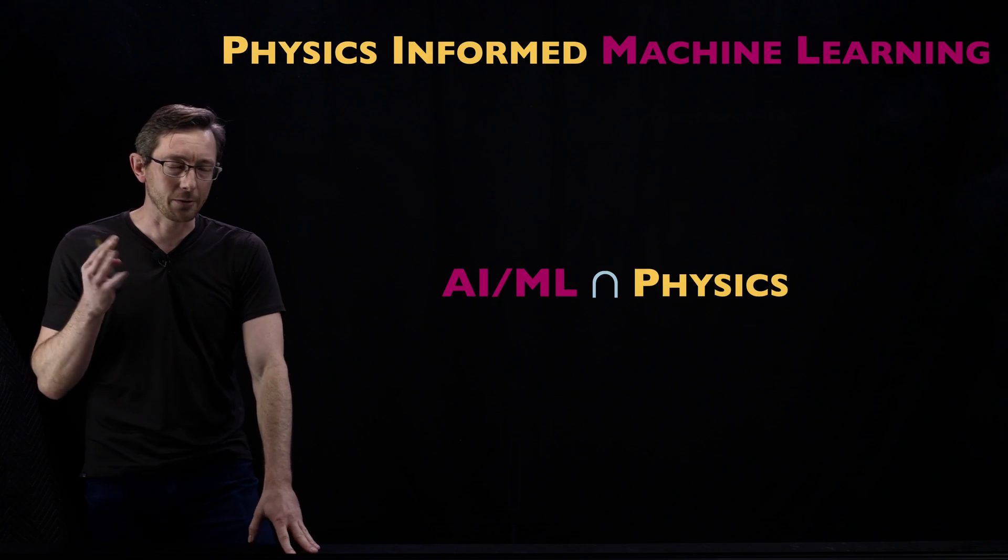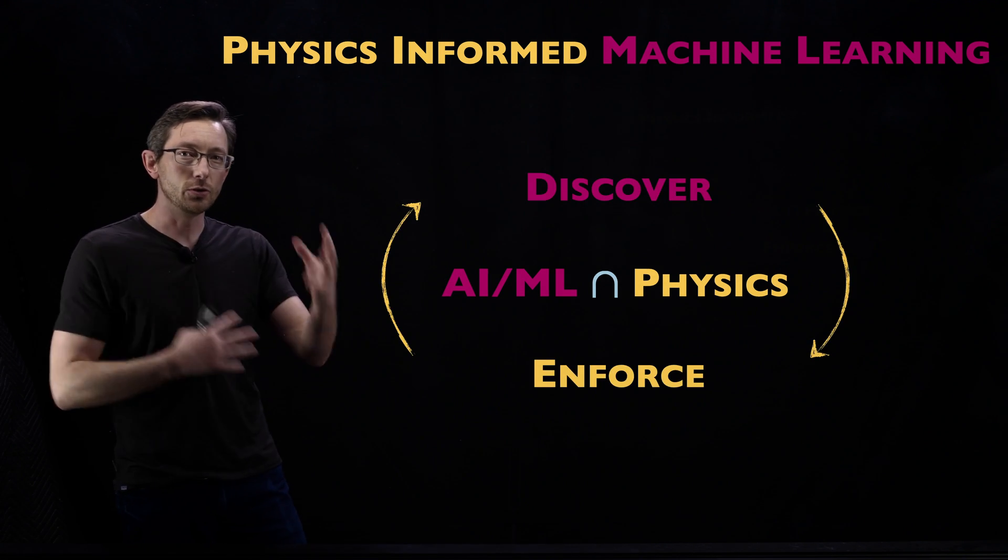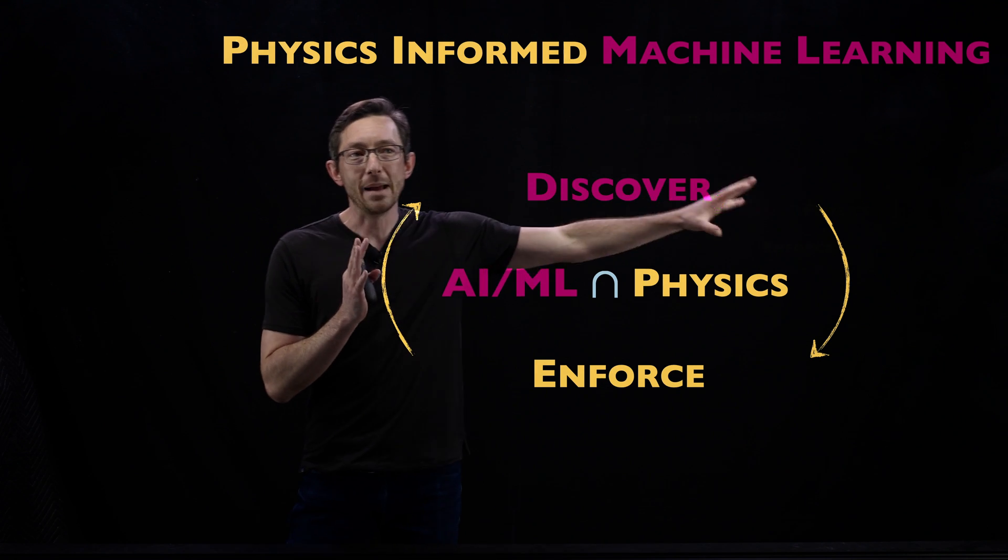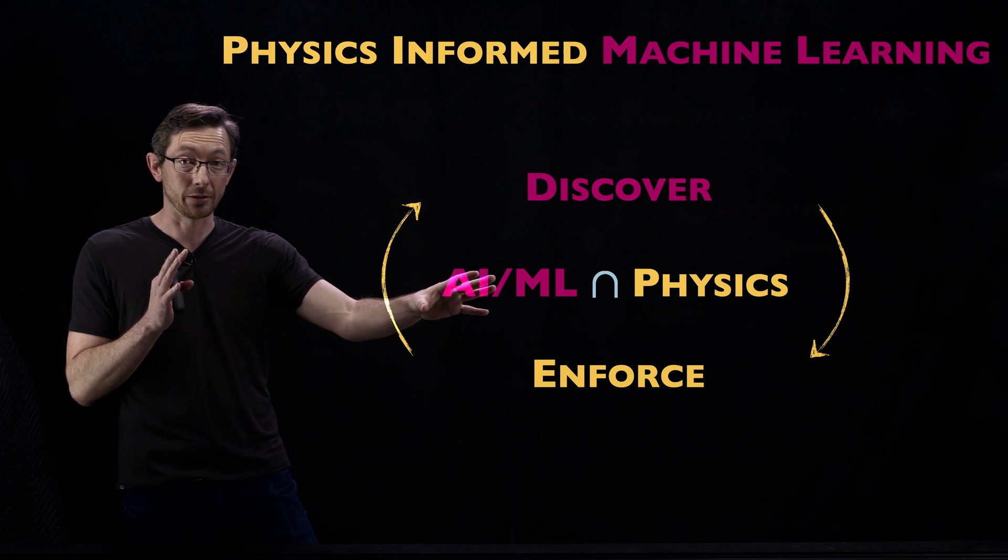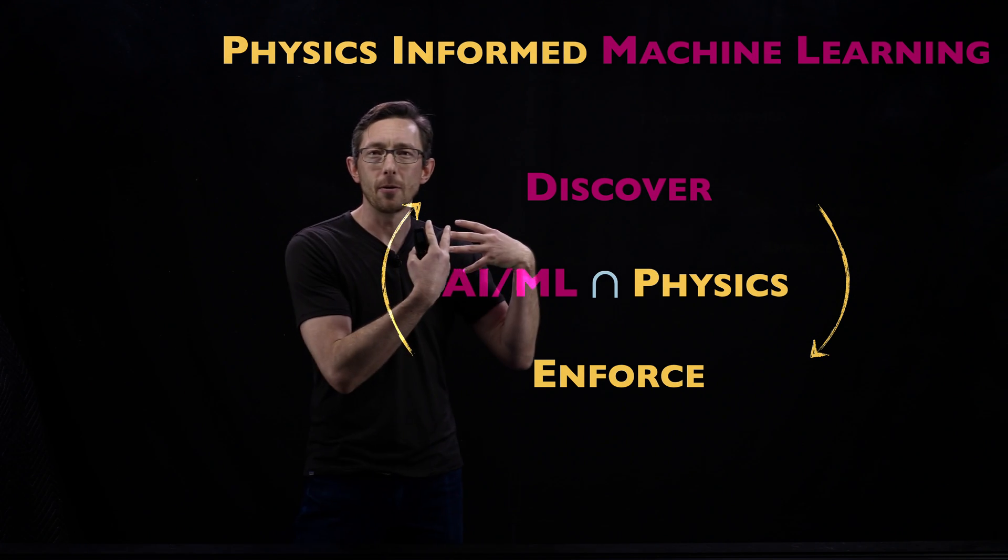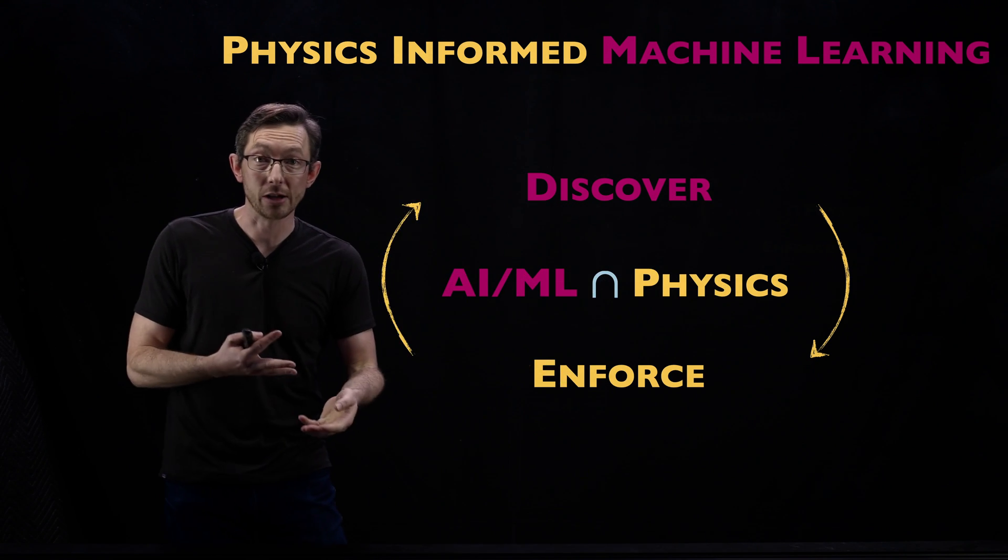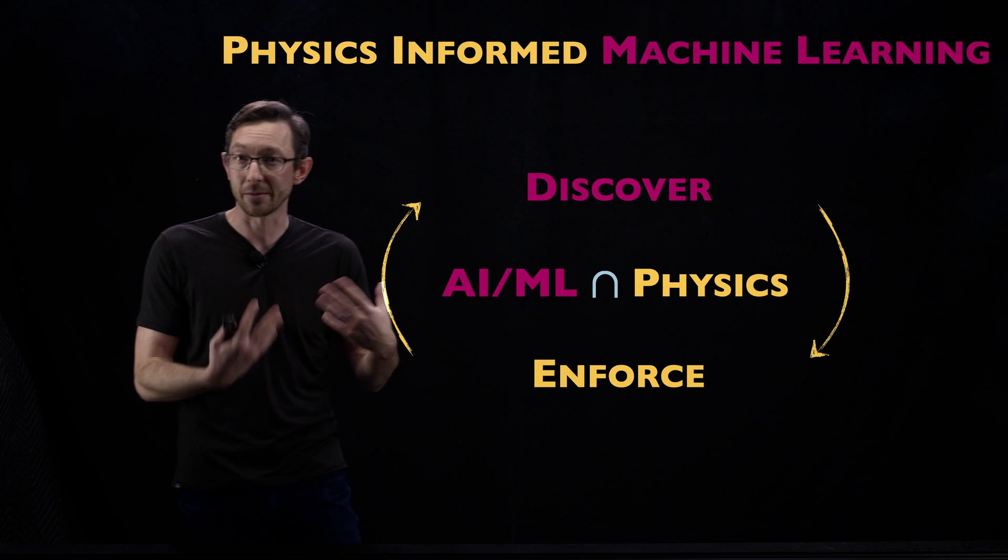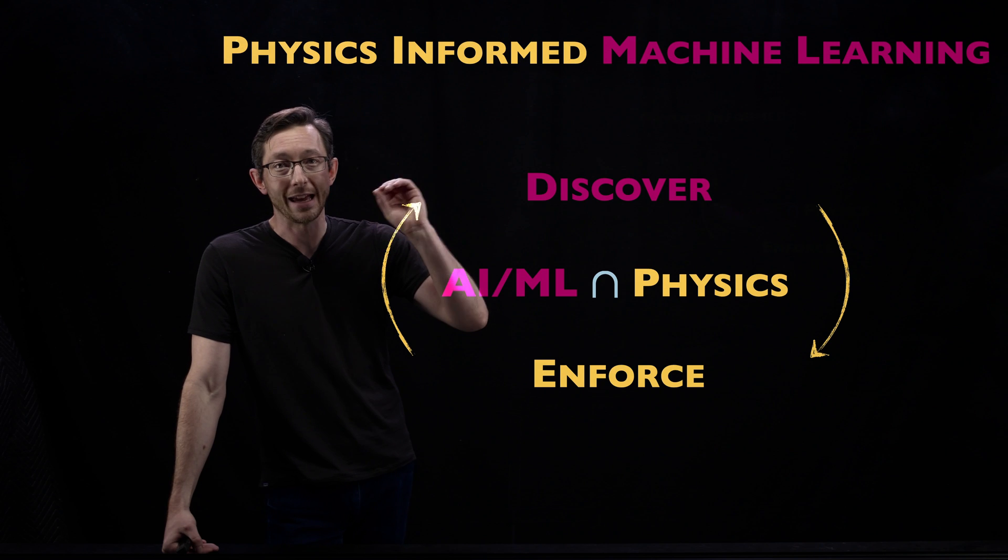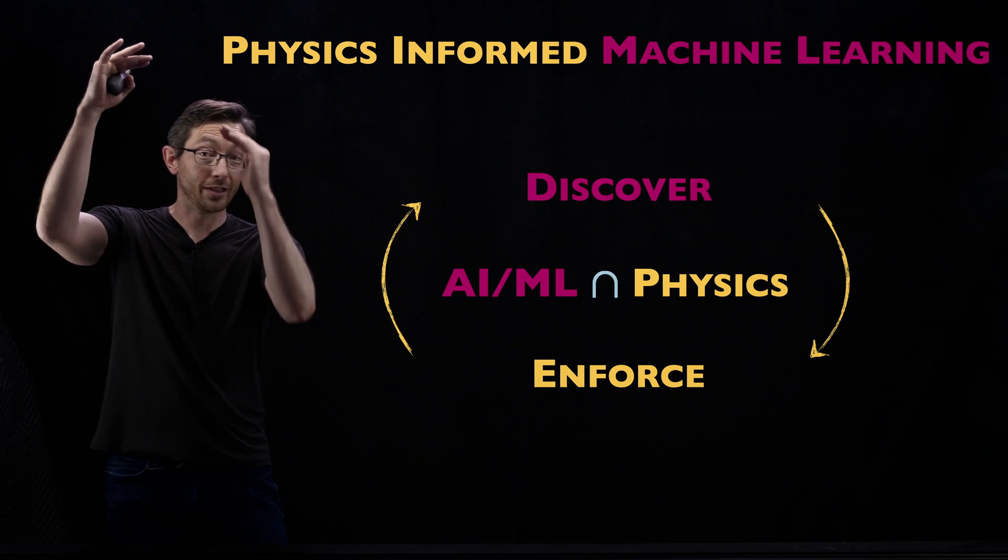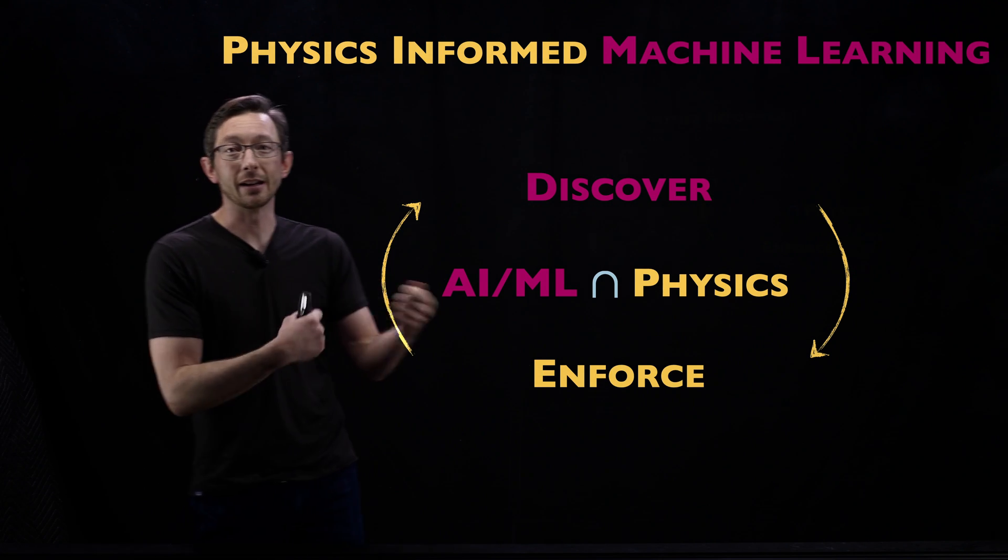When I'm talking about physics-informed machine learning, we are mostly talking about these two dual problems: baking in or enforcing partially known physics or known physics into machine learning algorithms. If I know physics—that could mean a lot of things, maybe I know a partial differential equation, maybe I know a conservation law, maybe I know a symmetry or invariant—then we can enforce that or promote that in our machine learning models and often get better models with less data.